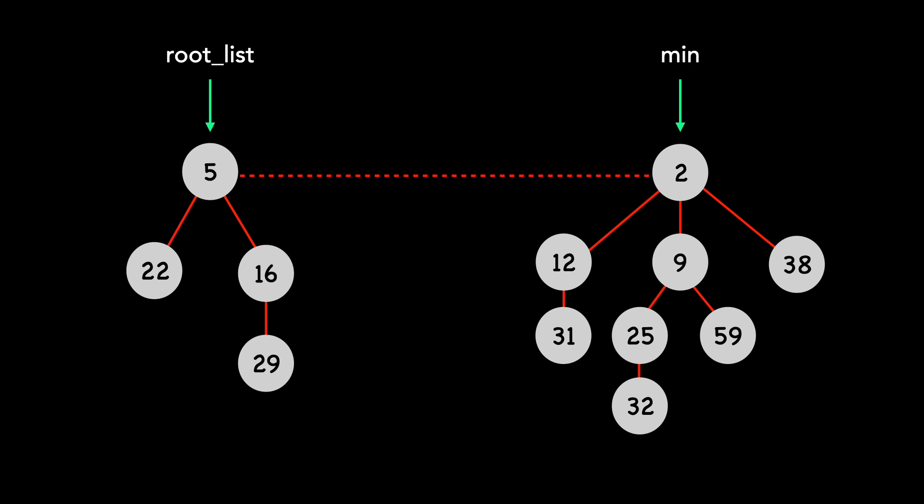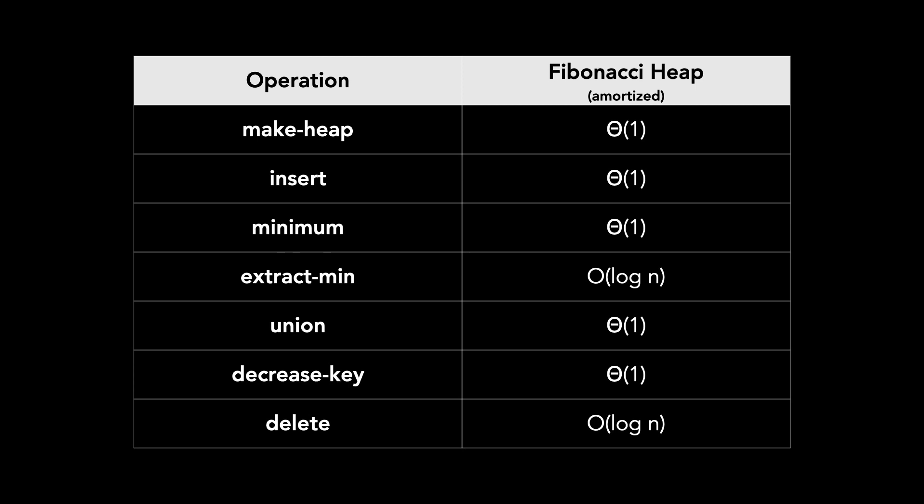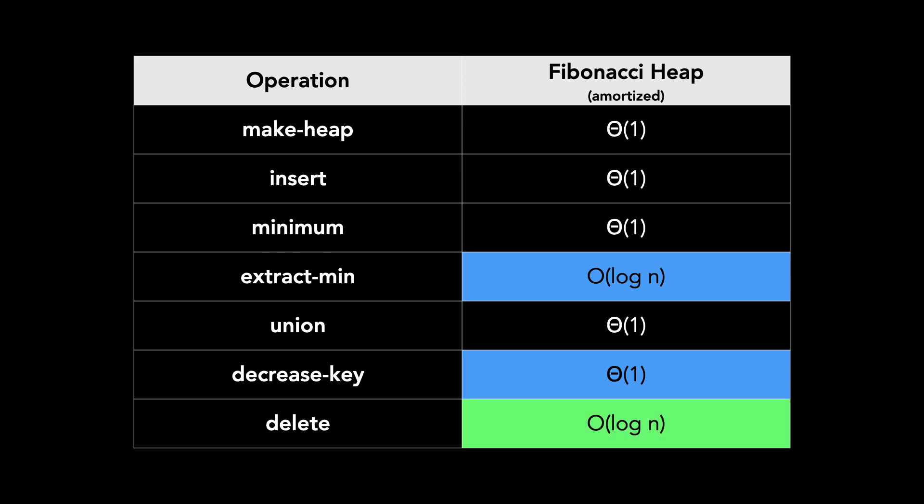The code for this is on my GitHub and linked below. I won't discuss runtime at length, but here's the chart from the first video. Since delete calls both the decrease key and extract min, the runtime of delete is big O of log n.